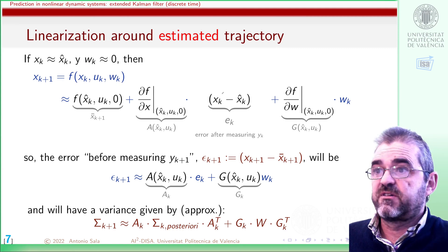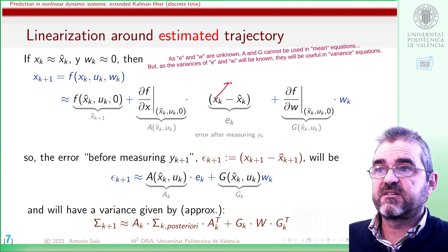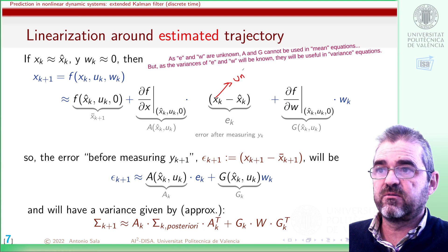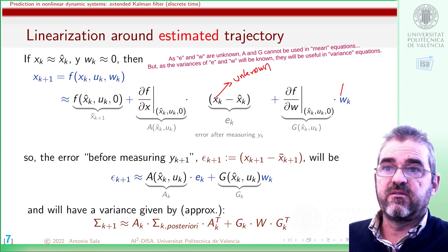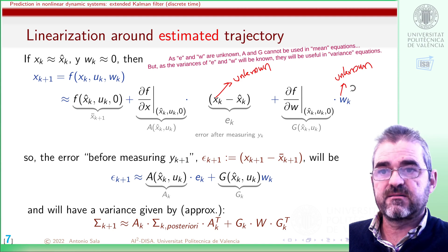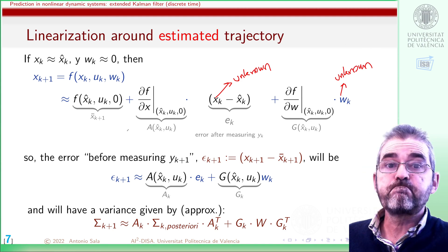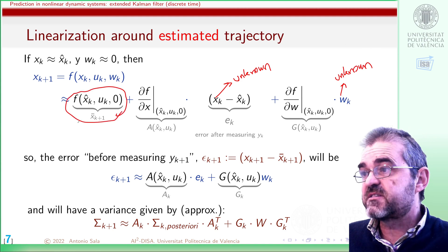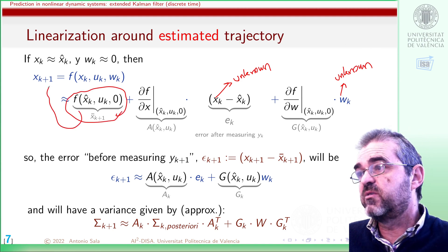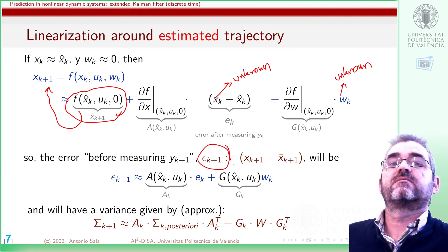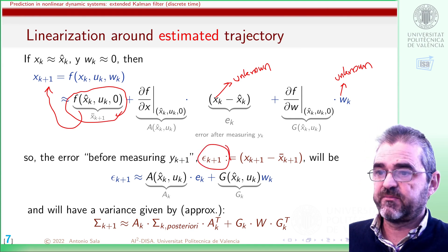Of course, the problem with this is that the true state is unknown, and the noise is also unknown — we only know its variance. If I move this thing to the other side, I will call that epsilon k+1.